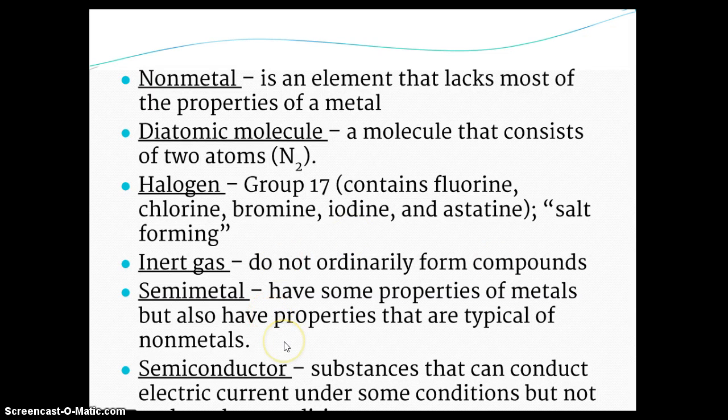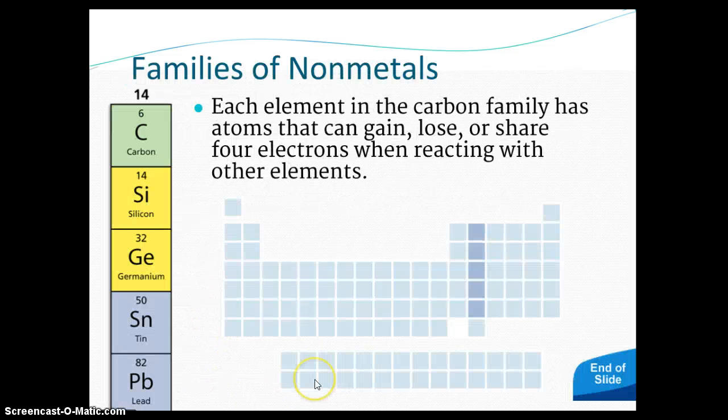Semimetals have properties of both metals and nonmetals. And a semiconductor is a substance that can conduct electrical current under some situations but not others. So semimetals or metalloids have properties of both metals and nonmetals.